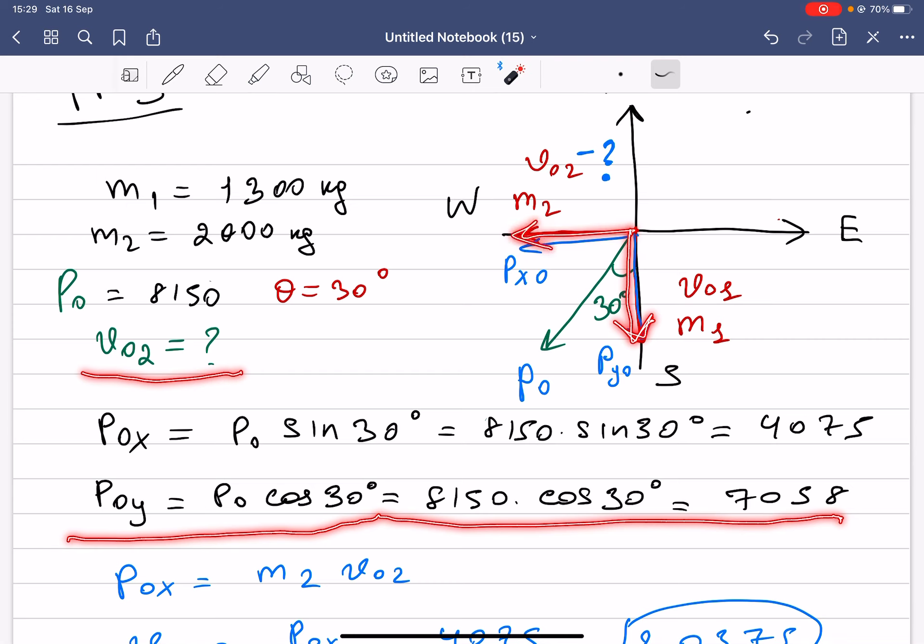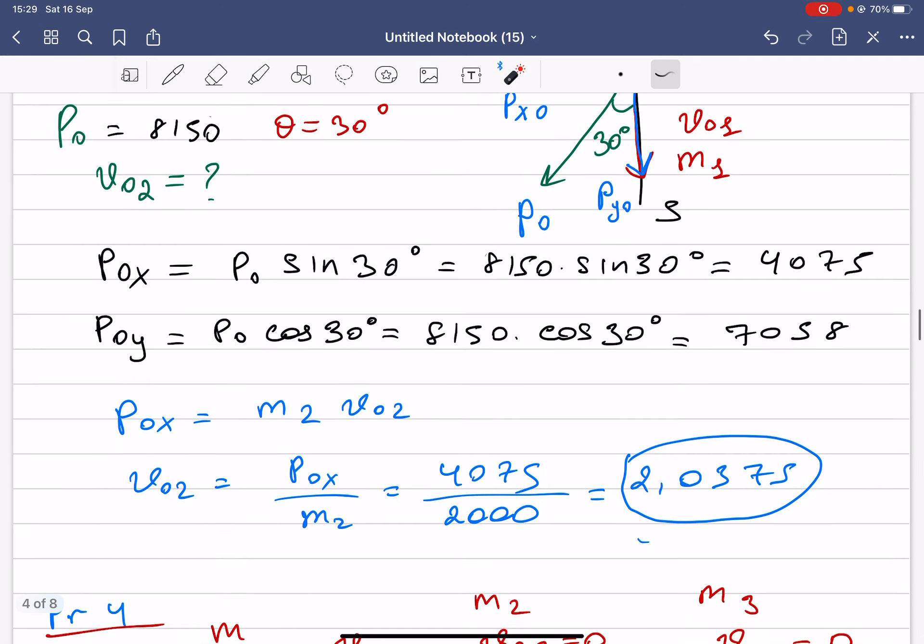The second car is this one. Since we have mass two moving this way and we also know the initial momentum of this one, what we can do is initial momentum x equals m2 times v_initial_2. From there, we have to find v_initial_2.